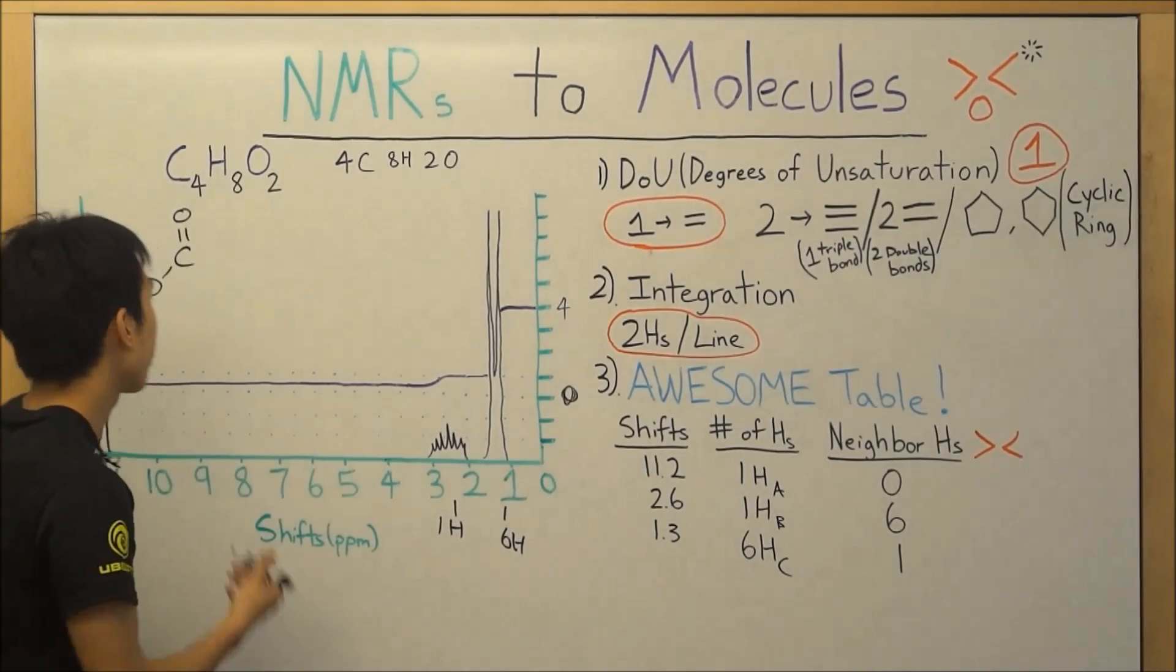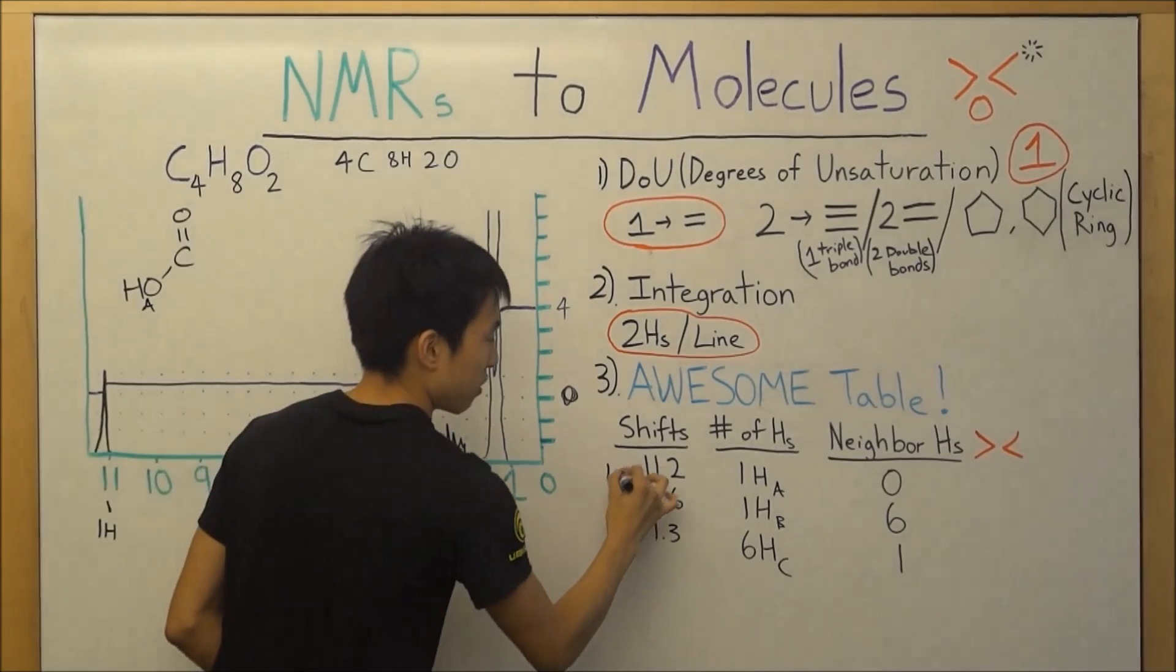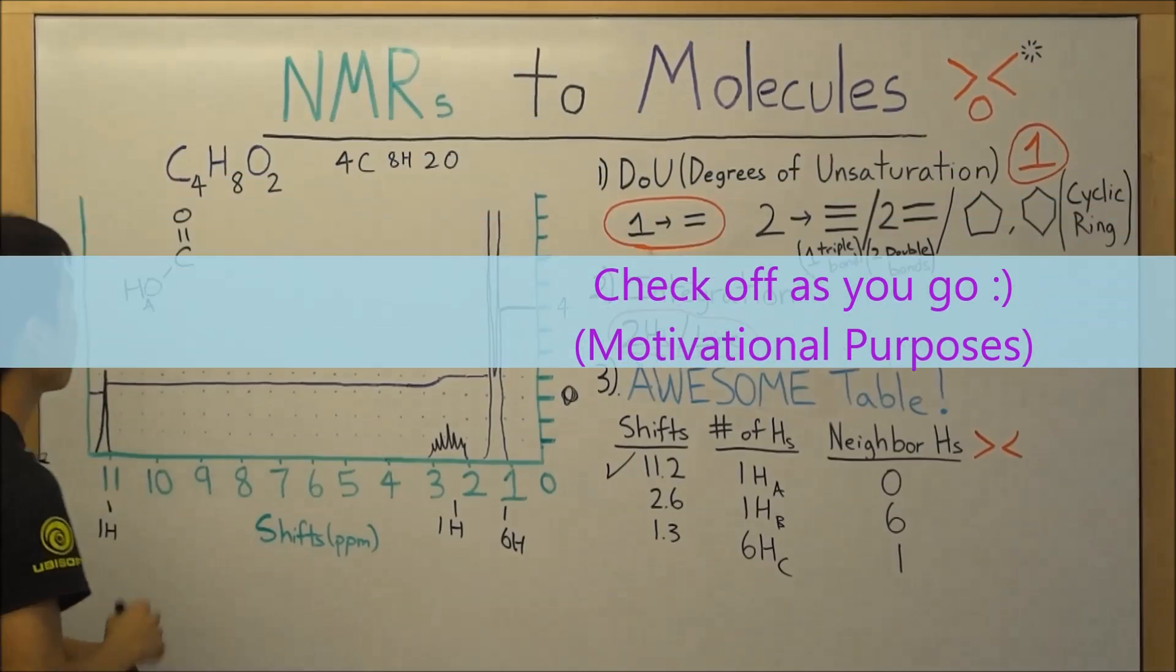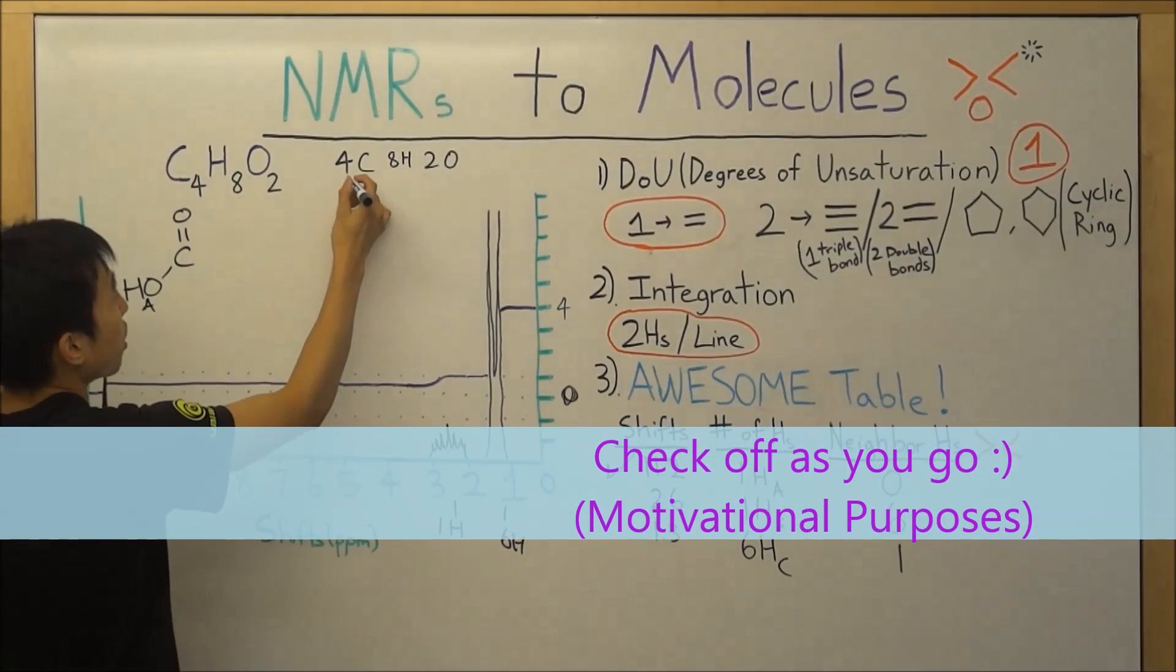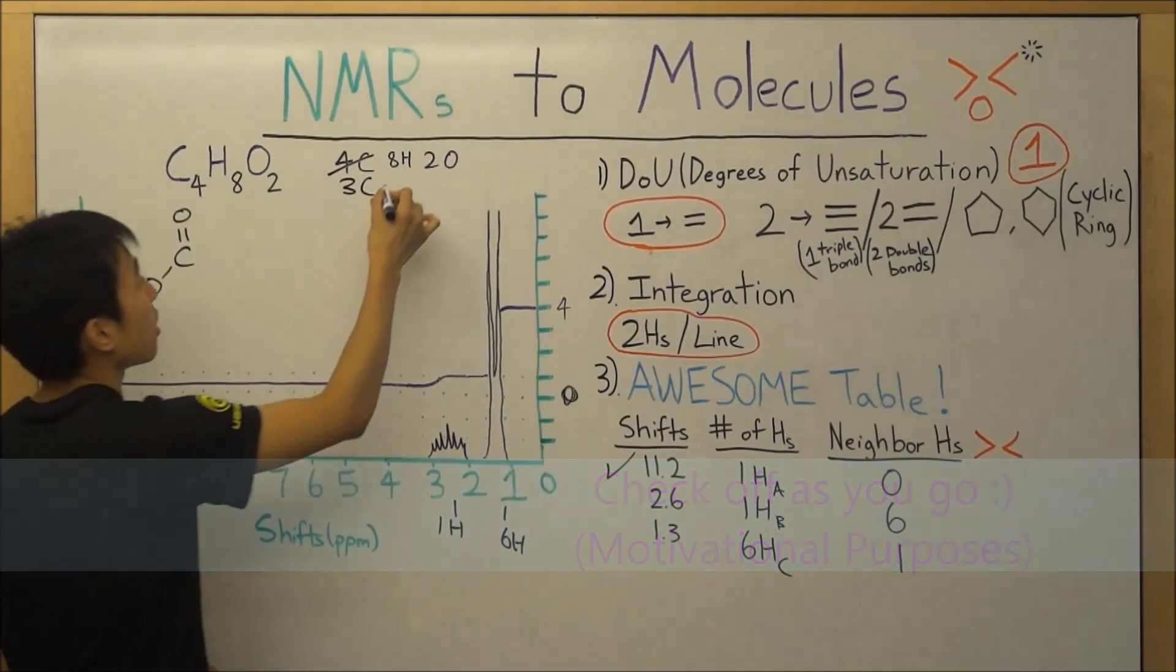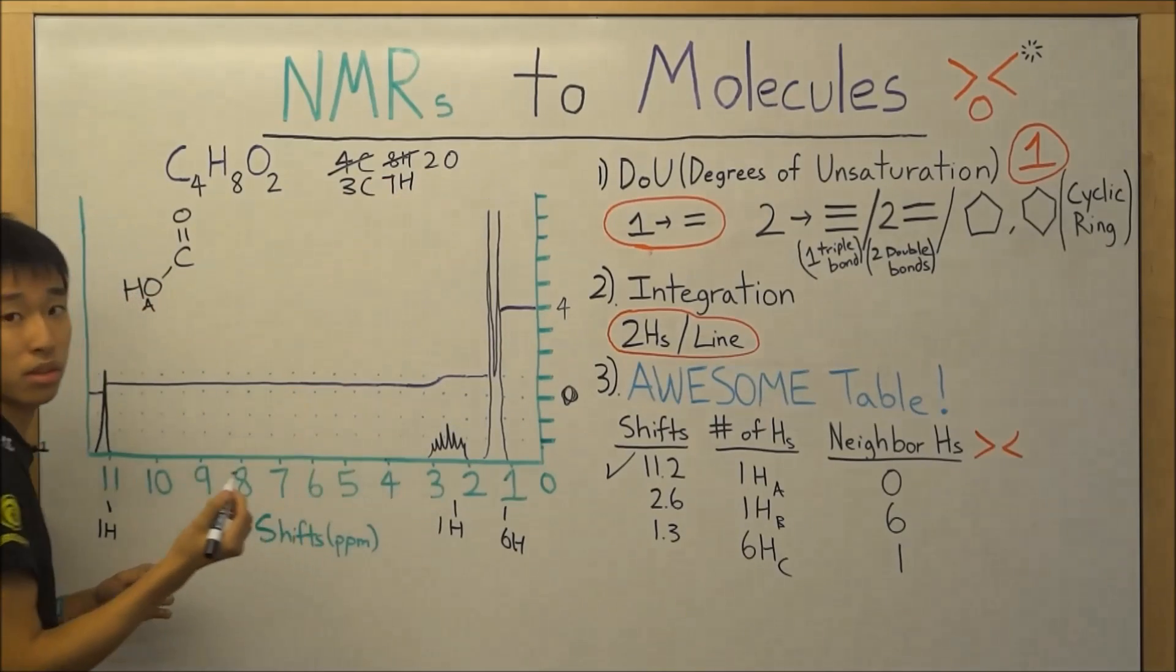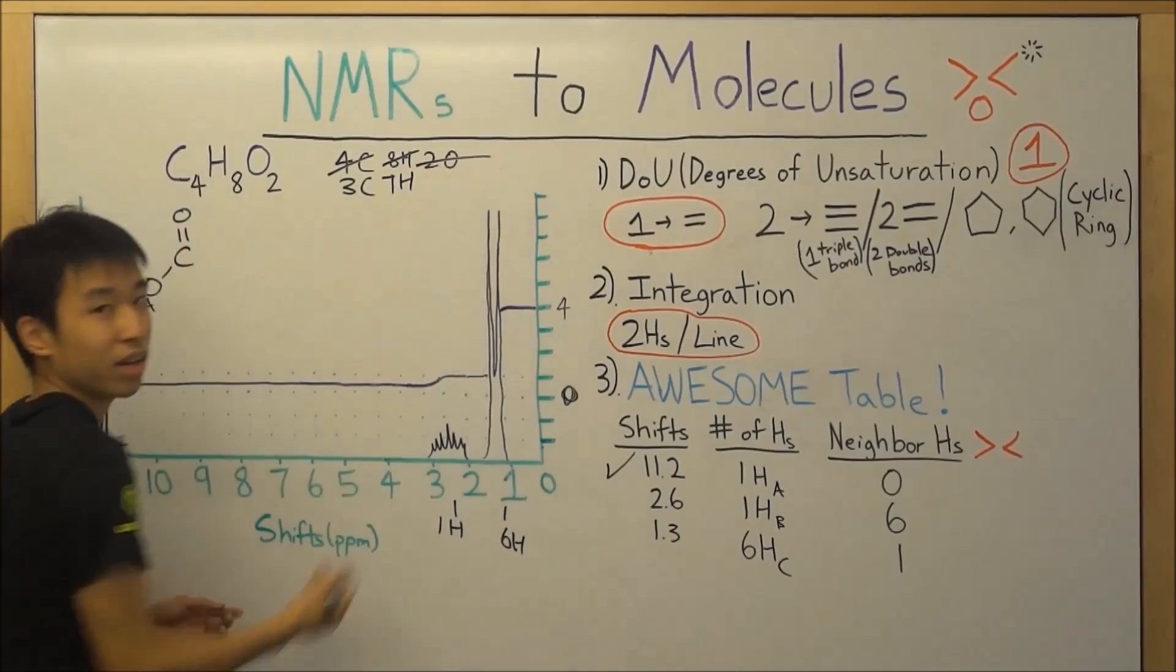We basically already found out where HA is. So you could basically check that off. And then we took care of one carbon. So now we still need three more carbons. We took away one, I mean, we drew one of the hydrogens. So we still need seven. And both the oxygens are taken care of, alright?